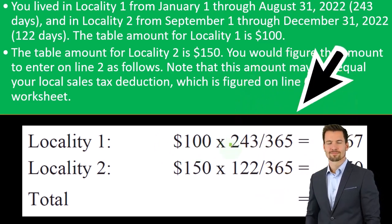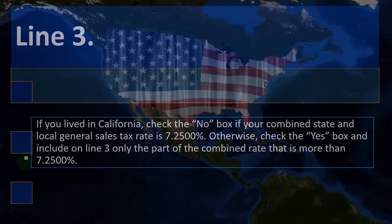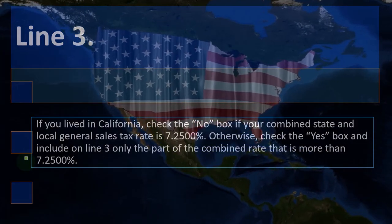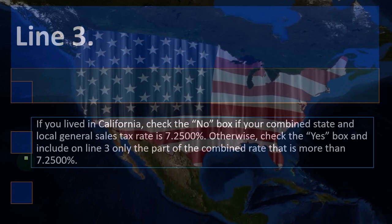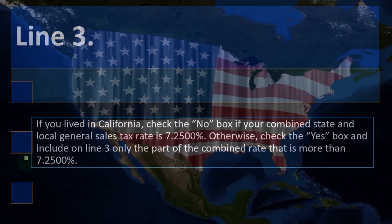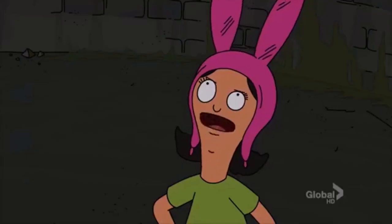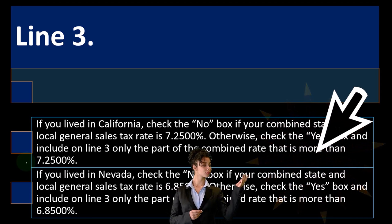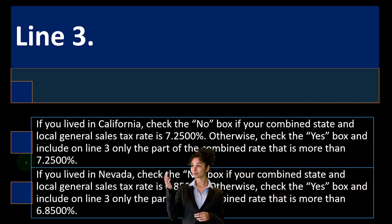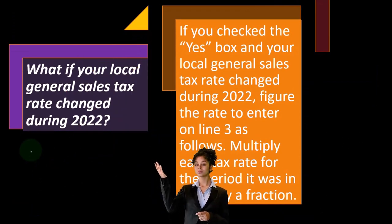The number of days in locality one is 243, divided by 365. For line three: if you lived in California, check the no box if your combined state and local general sales tax rate is 7.25%; otherwise check the yes box and include only the part of the combined rate that is more than 7.25%. If you lived in Nevada, check the no box if your combined state and local general sales tax rate is 6.85%; otherwise check the yes box and include only the part of the combined rate that is more than 6.85%.